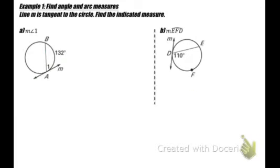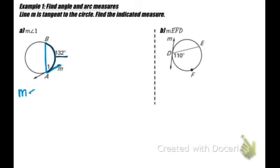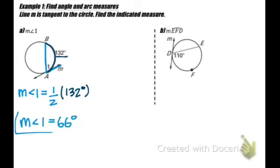Example 1A: line M is tangent to the circle. Chord BA intersects tangent line M at the point of tangency A, forming angle 1. The measurement of angle 1 is half the measurement of its intercepted arc. So angle 1 equals one-half of 132, which gives a measurement of 66 degrees.